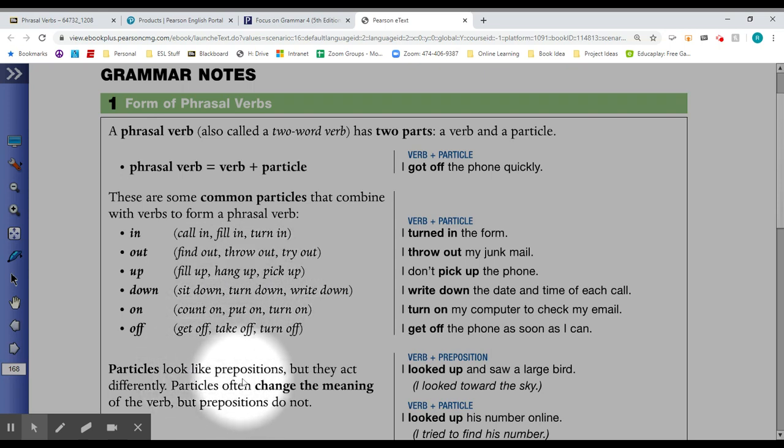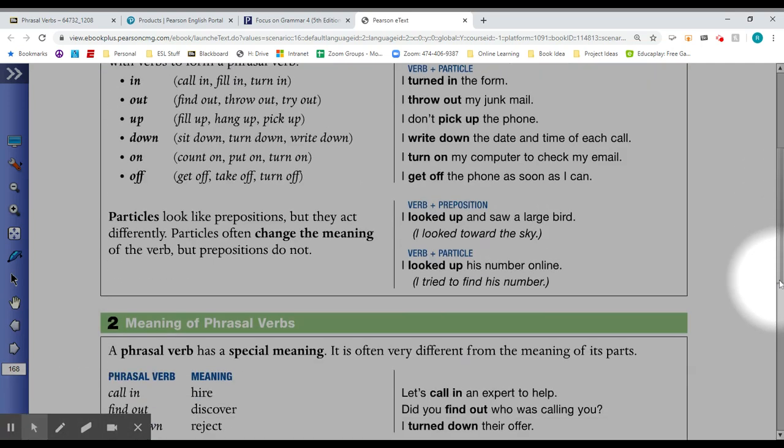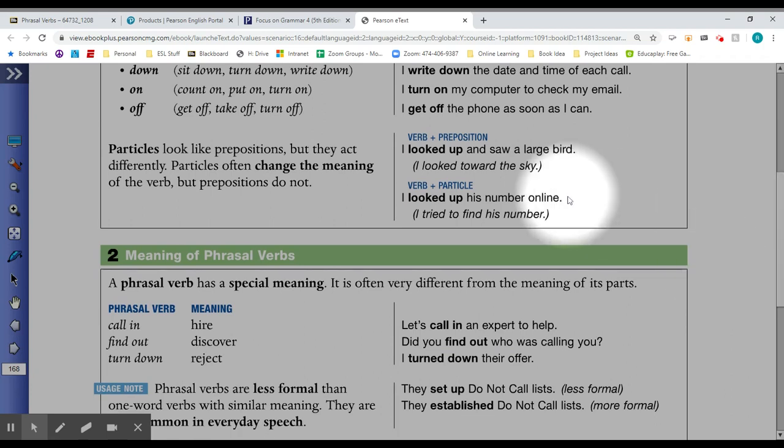Particles look like prepositions, but they act differently. Prepositions tell where something might happen. Particles change the meaning of the verb, but prepositions do not. In the sentence, I looked up and saw a large bird to look toward the sky. Here we see a verb plus a preposition, to look up.